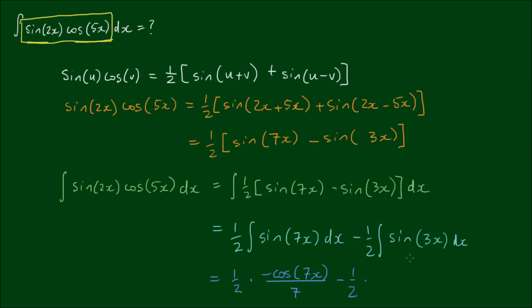Again, sine integrates to negative cosine. The term inside, 3x remains the same, but we have to divide by 3, which is the derivative of 3x. And finally, let's not forget the integration constant, C, being an indefinite integral.